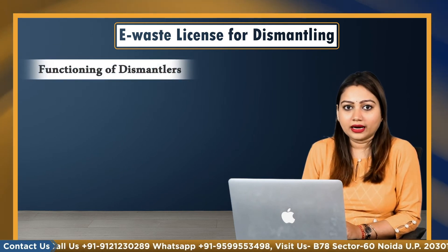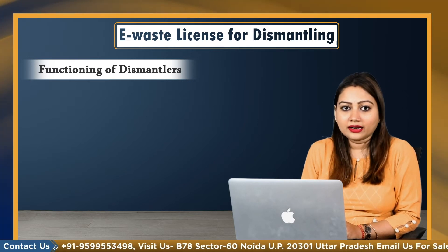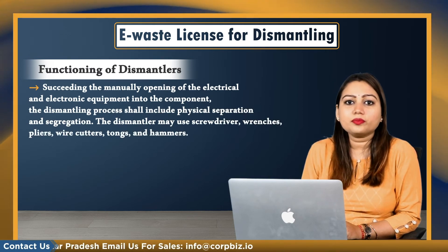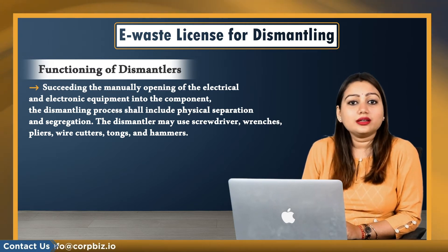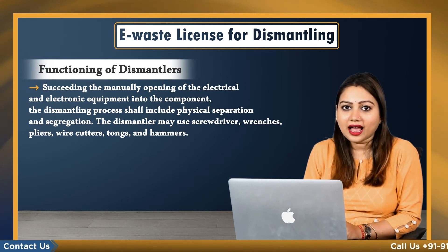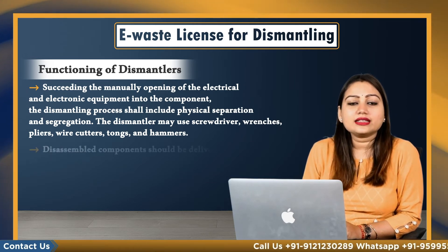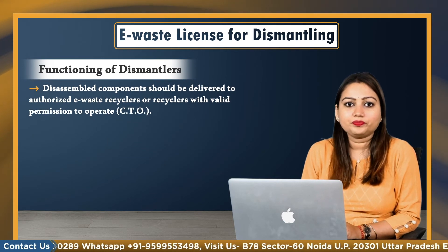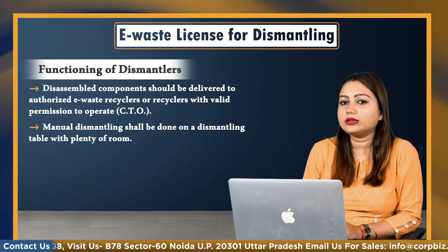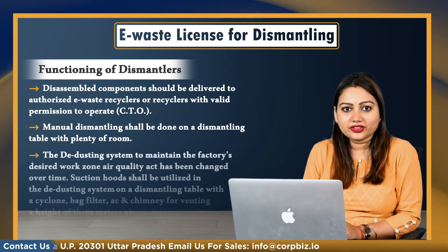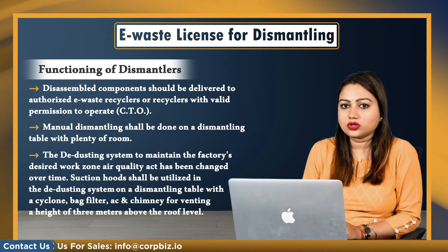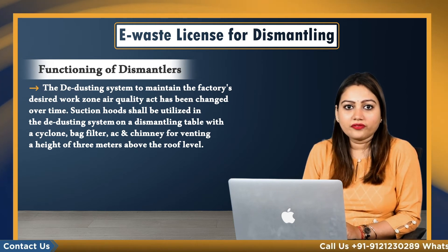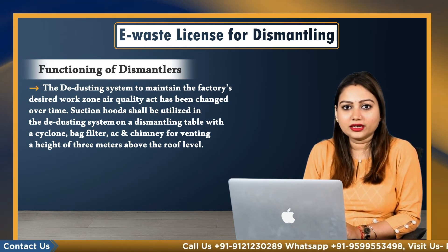The functioning of the dismantlers includes de-dusting and a manual dismantling process, which involves manually opening the electrical and electronic equipment into its components. The dismantling process shall include physical separation and segregation. The dismantler may use screwdrivers, wrenches, pliers, wire cutters, tongs and hammers. Disassembled components should be delivered to authorized e-waste recyclers or recyclers with valid permission to operate. Manual dismantling shall be done on a dismantling table with plenty of room. The de-dusting system maintains the factory's desired work zone air quality. Suction hoods shall be utilized in the de-dusting system on a dismantling table with a cyclone, bag filter, AC and chimney for venting at a height of 3 meters above the roof level.